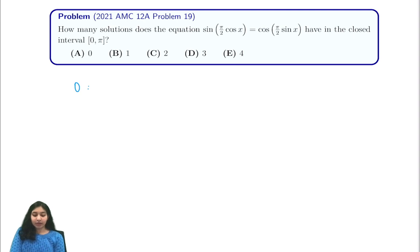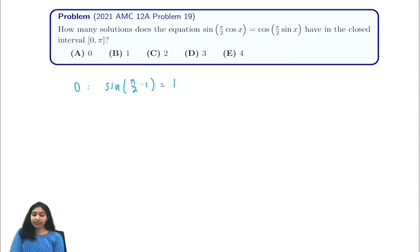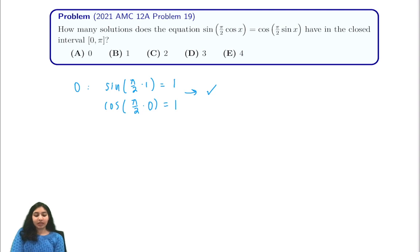First let's look at x=0. That gives us sine of (π/2 · cos(0)) = sine of (π/2 · 1) = sine(π/2) = 1. For the right-hand side, cosine of (π/2 · sin(0)) = cosine of (π/2 · 0) = cosine(0) = 1. So immediately we have found at least one solution, and we can eliminate answer choice A.